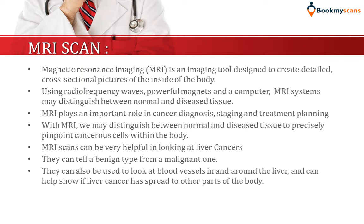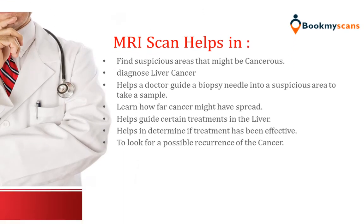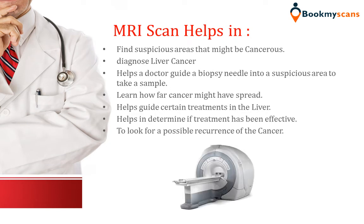MRI scans can be very helpful in looking at liver cancers. They can differentiate a benign type from a malignant type. They can also be used to look at blood vessels in and around the liver and can help show if liver cancer has spread to other parts. MRI scan helps in finding suspicious areas that might be cancerous, diagnosing liver cancer, guiding a biopsy needle into a suspicious area to take a sample, learning how far cancer might have spread, guiding certain treatments in the liver, determining if treatment has been effective, and looking for a possible recurrence of the cancer.